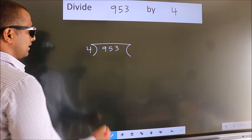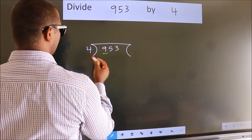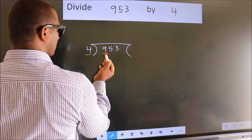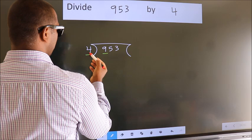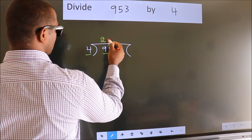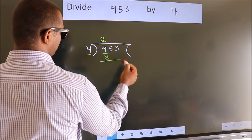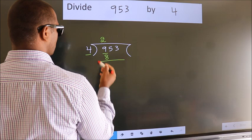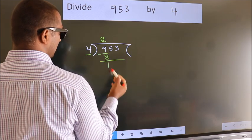Next. Here we have 9, here 4. A number close to 9 in 4 table is 4 twos 8. Now, we should subtract. We get 1.